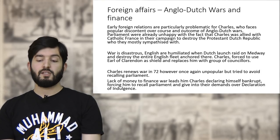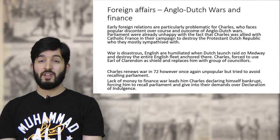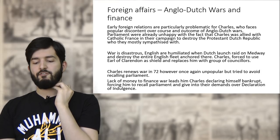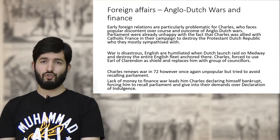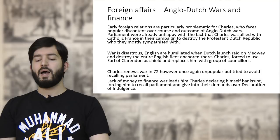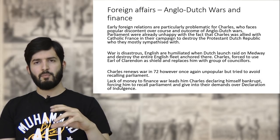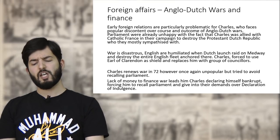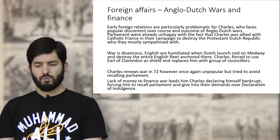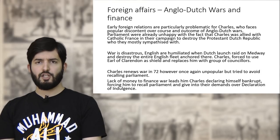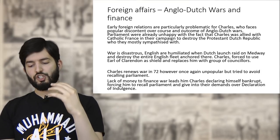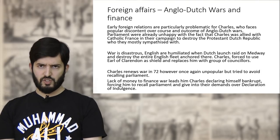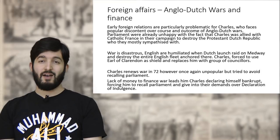The financial weakness leads Charles to pursue a problematic foreign policy — allying with the French and going to war with the Dutch. Charles faces considerable popular discontent over both the course and outcome of the Anglo-Dutch wars. He creates problems by allying with Catholic France in their campaign against the Protestant Dutch Republic, which Parliament largely sympathised with. To make matters worse, the war is a disaster — the Dutch launched a raid on the Medway River, destroyed the entire English fleet anchored there, forcing England to sign a terrible treaty.